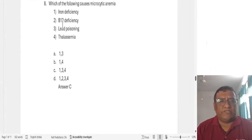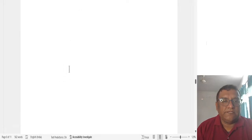Next. This was a simple straight question. Which of the following causes microcytic anemia? We discussed this so many times. Every time we were talking SITA is the mnemonic. Sideroblastic anemia, iron deficiency anemia, thalassemia, and anemia of chronic disease. So iron deficiency correct. B12 deficiency will cause macrocytic. Lead poisoning leads to sideroblastic anemia. And thalassemia will lead to microcytic anemia. So answer to this question is 1, 3, and 4. Option C is the correct answer here.